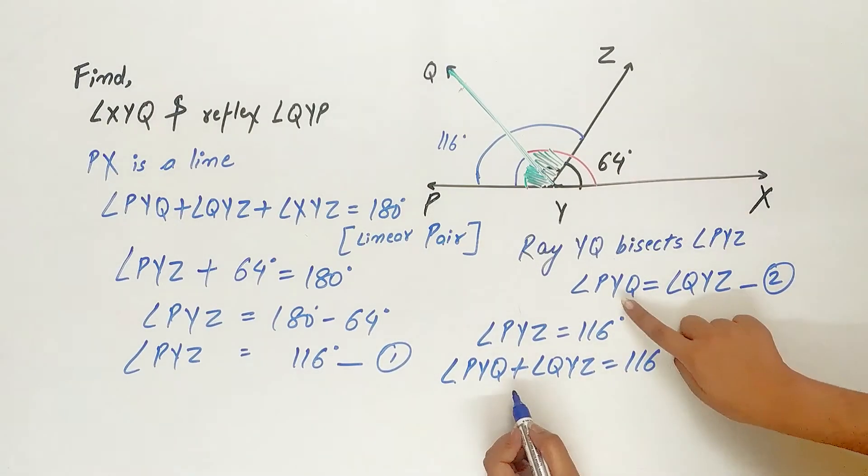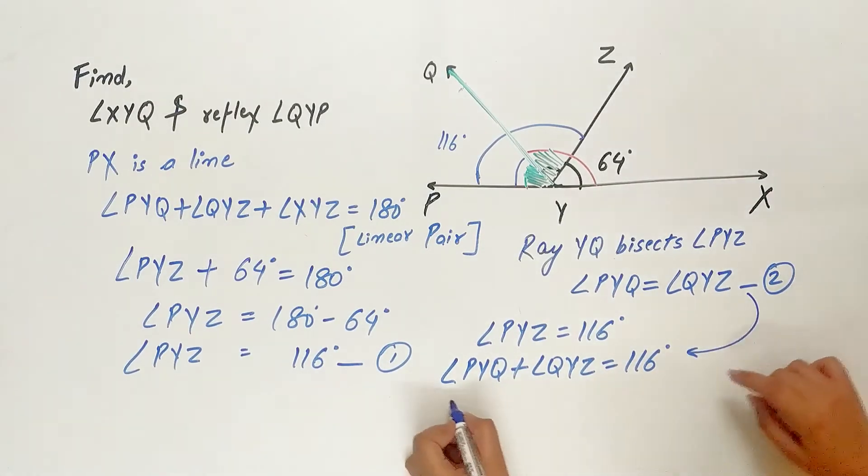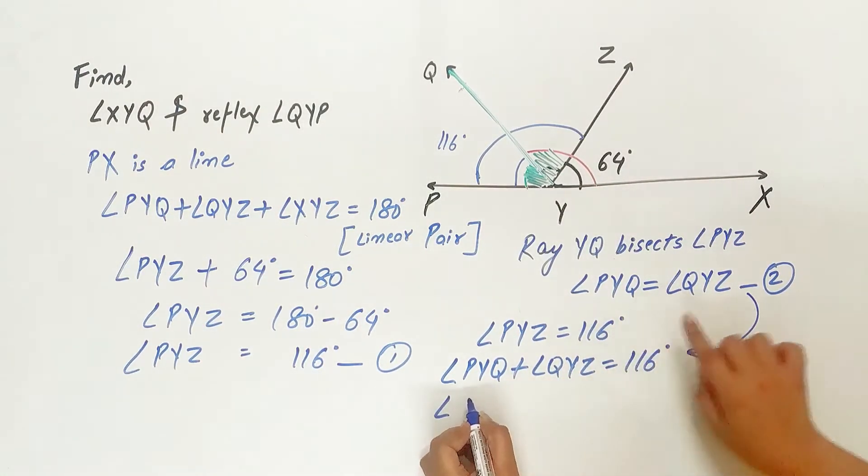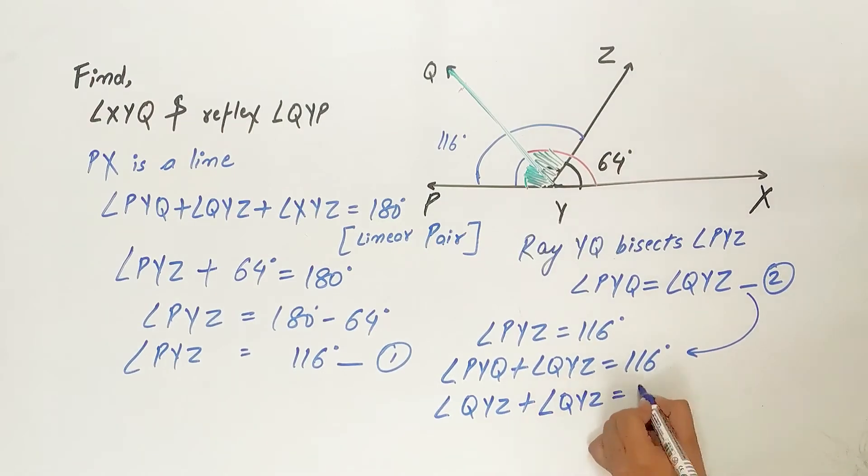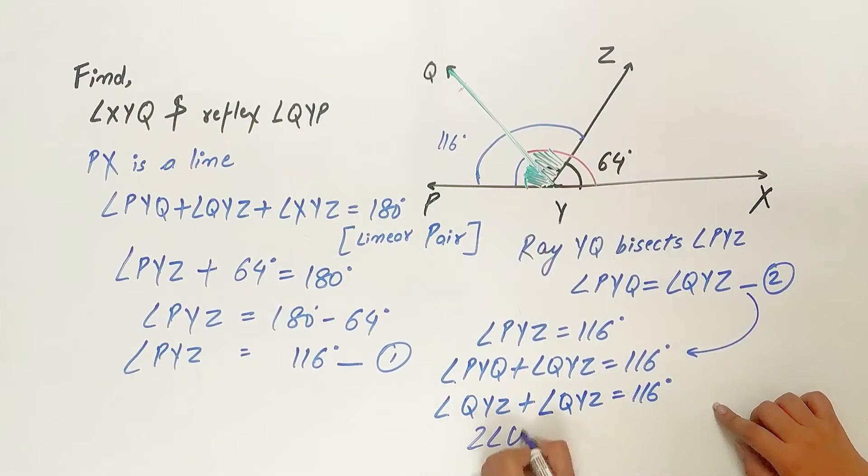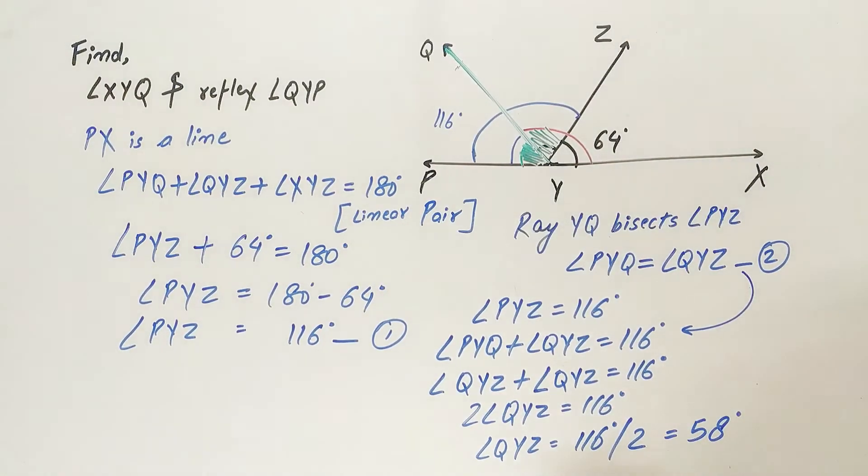We know PYQ is equal to QYZ. So can I write QYZ in place of angle PYQ? So twice of angle QYZ is equal to 116. So angle QYZ is equal to 116 degrees divided by two which is equal to 58 degrees.